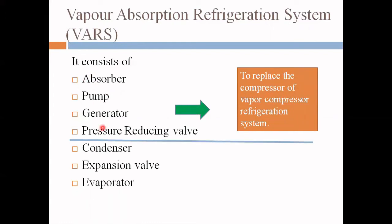The condenser, expansion valve, and evaporator are the same in both systems. These four components — absorber, pump, generator, and pressure reducing valve — replace the mechanical compressor of the Vapor Compression Refrigeration System. The mechanical compressor, such as a hermetically sealed compressor in a refrigerator or domestic AC, contains moving parts like a piston, cylinder, and connecting rod. Replacing it with these four parts gives us the VARS.